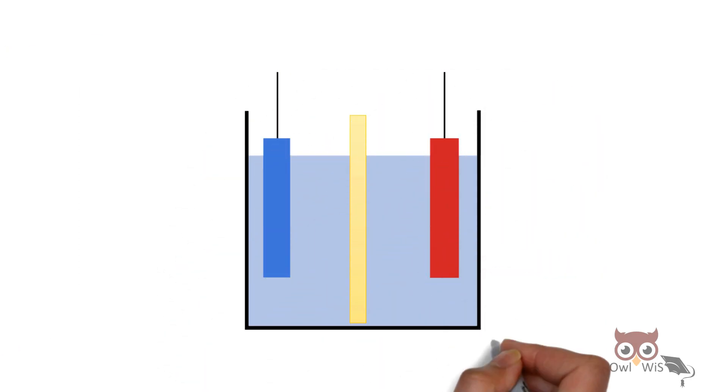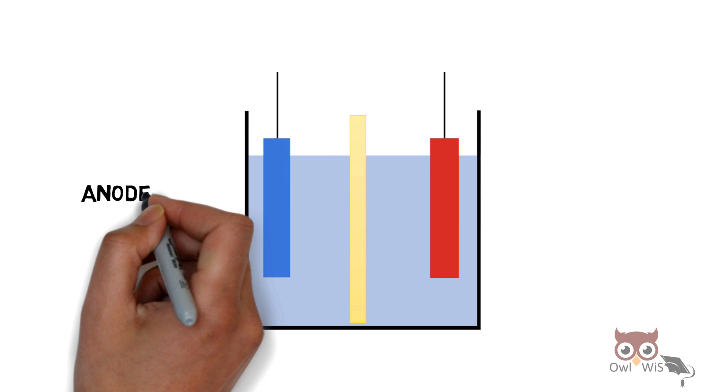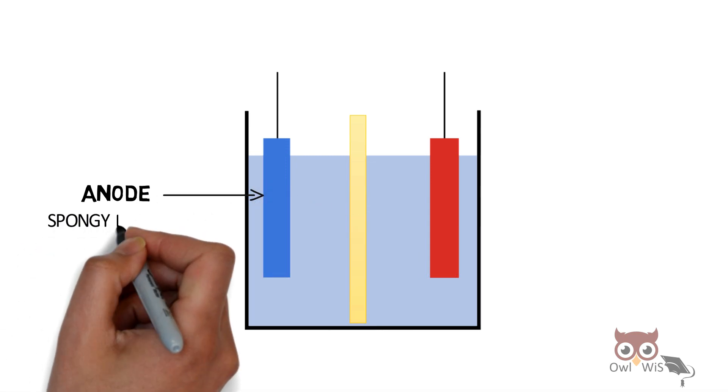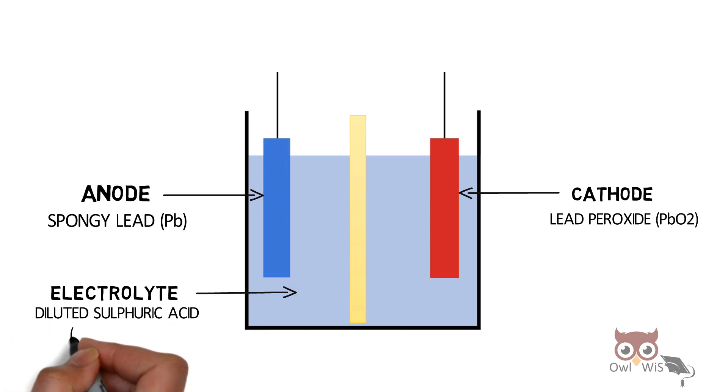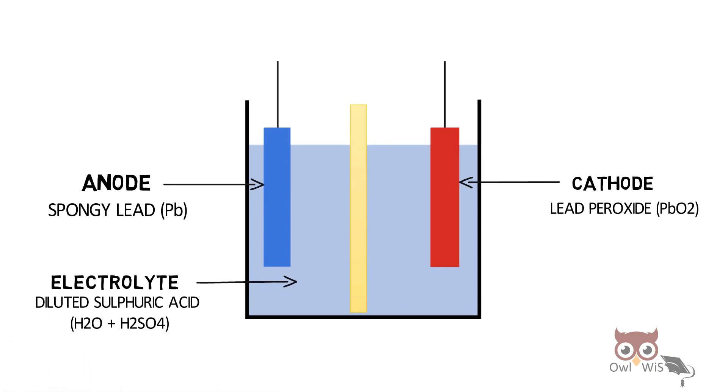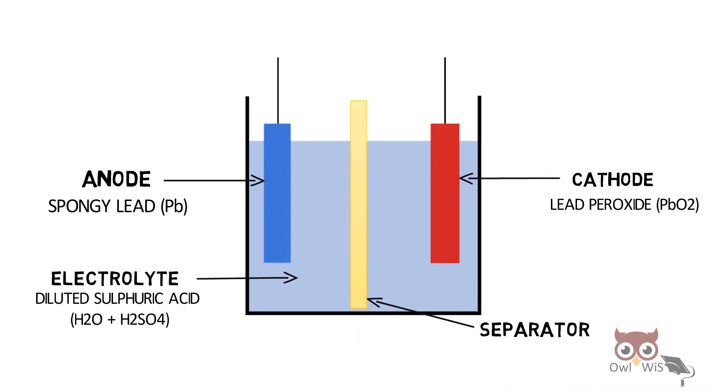Consider a simplified battery cell. The anode is made up of spongy lead (Pb). The cathode is made from lead peroxide (PbO2). The electrolyte is diluted sulfuric acid. The separator is absorbent glass mat.